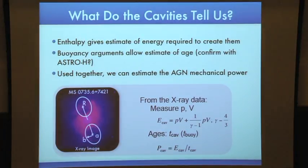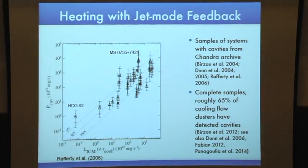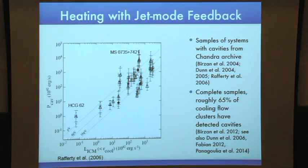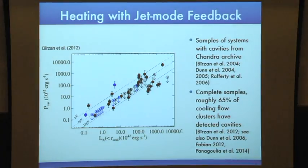With this information, we can understand if heating by cavities is energetically feasible in balancing cooling. I show cavity power versus cooling luminosity for a sample of systems from Rafferty et al. 2006 from the Chandra archive, showing that at least 50% of systems have enough energy to balance cooling. We also did complete samples like B55 and Hi-Flux, finding 65% of cooling flow clusters have detected cavities. However, Chandra allows us to measure cavities only in the most luminous systems, so we lack understanding at high redshift, which is critical for galaxy formation and evolution.